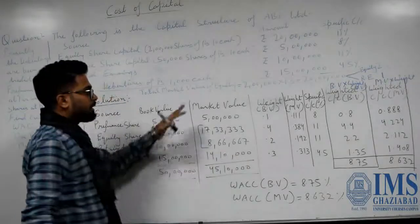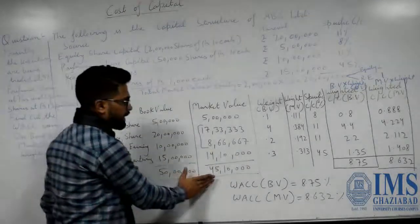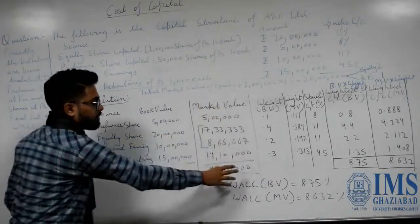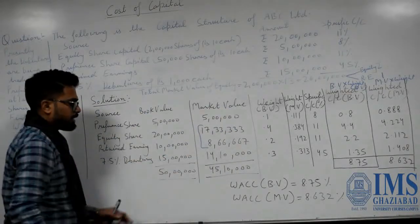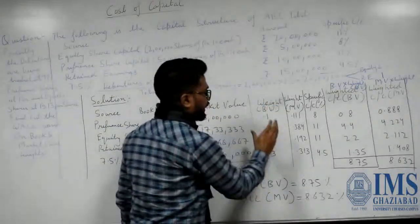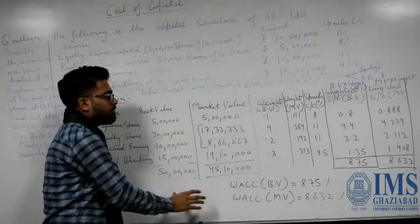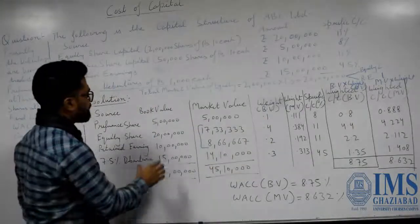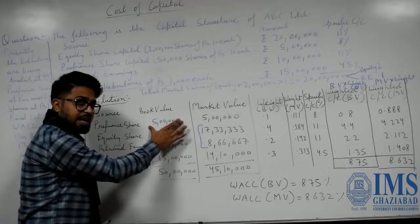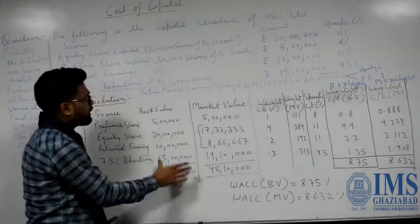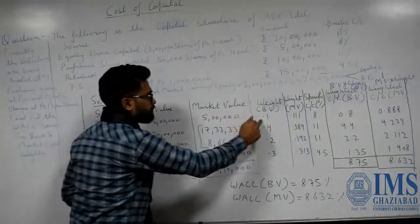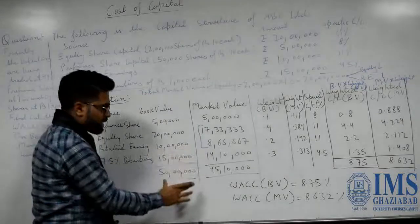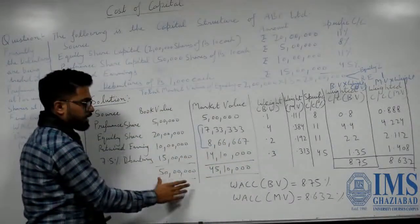94% of 15 lakh gives 14 lakh 10,000, which is the market value for debentures. Total market value is 45 lakh 10,000. The total book value is 50 lakh. Now we calculate the weights. For book value weights: preference shares — 5 lakh divided by 50 lakh = 0.1; equity shares — 20 lakh divided by 50 lakh = 0.4; retained earnings — 10 lakh divided by 50 lakh = 0.2; debentures — 15 lakh divided by 50 lakh = 0.3.